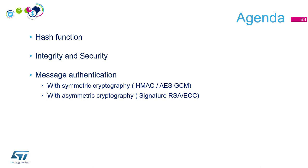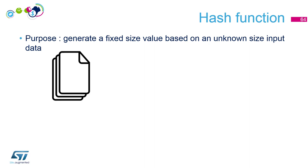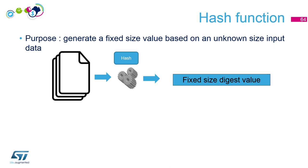Let's start with hash functions. What is the purpose of a hash function? A hash function should generate a fixed-size value based on an unknown-size input data. Imagine you've got a huge file of gigabytes of data — that's the input for your hash function — and the output should be a fixed-size digest value.